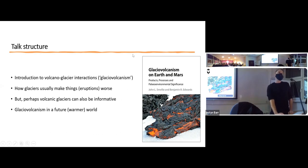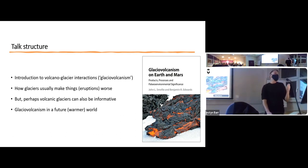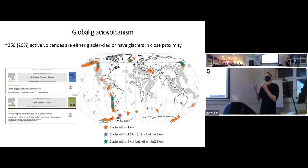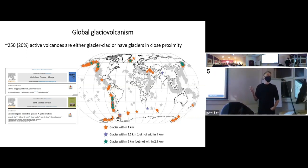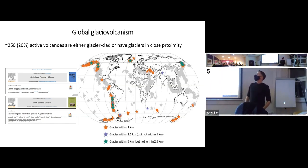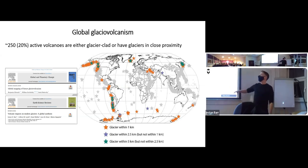Most of the volcanic eruptions that might spring to mind are probably glacier-volcanic, even if you've never thought about it before. This figure shows the volcanoes of the world — gray stars — where the colored stars have either glaciers on top of the volcano (orange) or glaciers within roughly five kilometers. All volcanoes with a colored star we class as glacial volcanic systems.